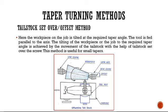The tailstock offset method shifts the axis of the live center and dead center so that the lathe chuck and tailstock are in an offset condition — the tailstock is shifted laterally from its guideway. Only a limited angle can be imparted, depending on the lathe's specification. This method is preferred for long tapers. The workpiece is tilted to the required taper angle, the tool is fed parallel to the axis, and the tilting is achieved by moving the tailstock with its set-over screw.